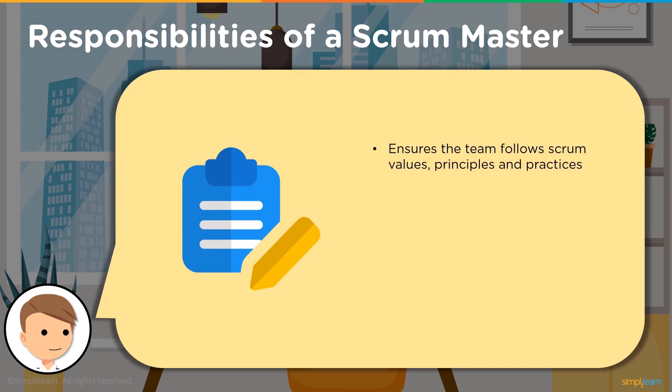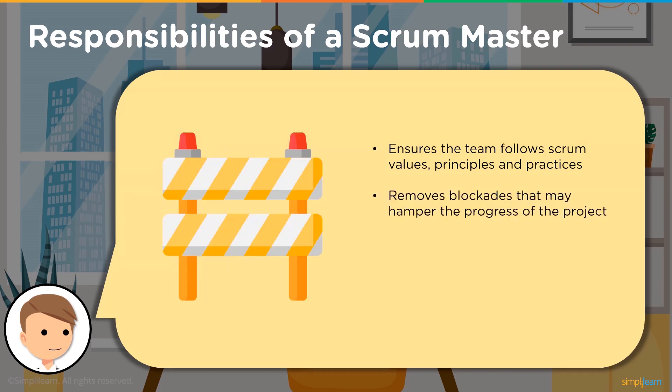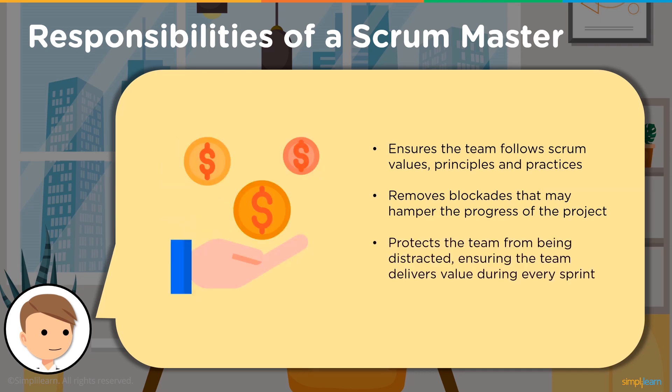The Scrum Master ensures that the product owner and development team follow Scrum values, principles, and practices. This helps the team work effectively and provide high-quality results. The Scrum Master also ensures the team's productivity is not affected by any blockers. If the problem cannot be solved by the team members on their own, the Scrum Master assesses the different blockers and prioritizes solving each one.